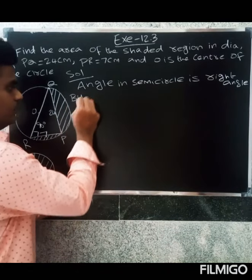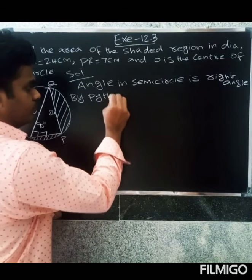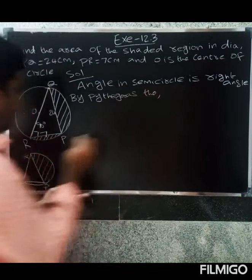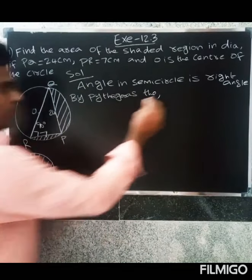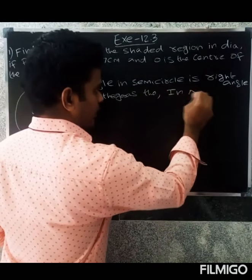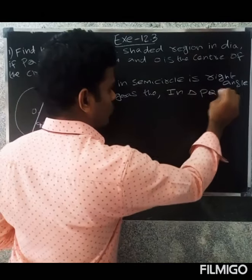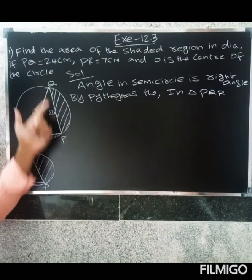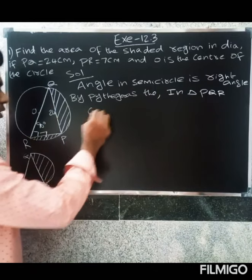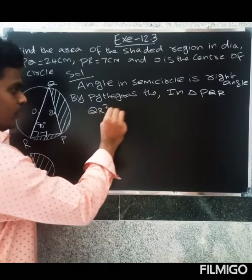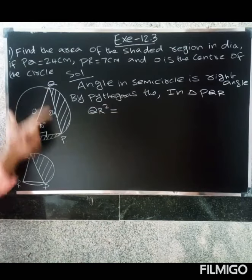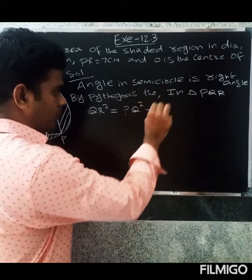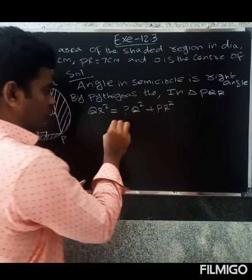By Pythagoras theorem in triangle PQR, hypotenuse side squared equals the sum of the remaining two sides squared. So QR squared equals PQ squared plus PR squared.